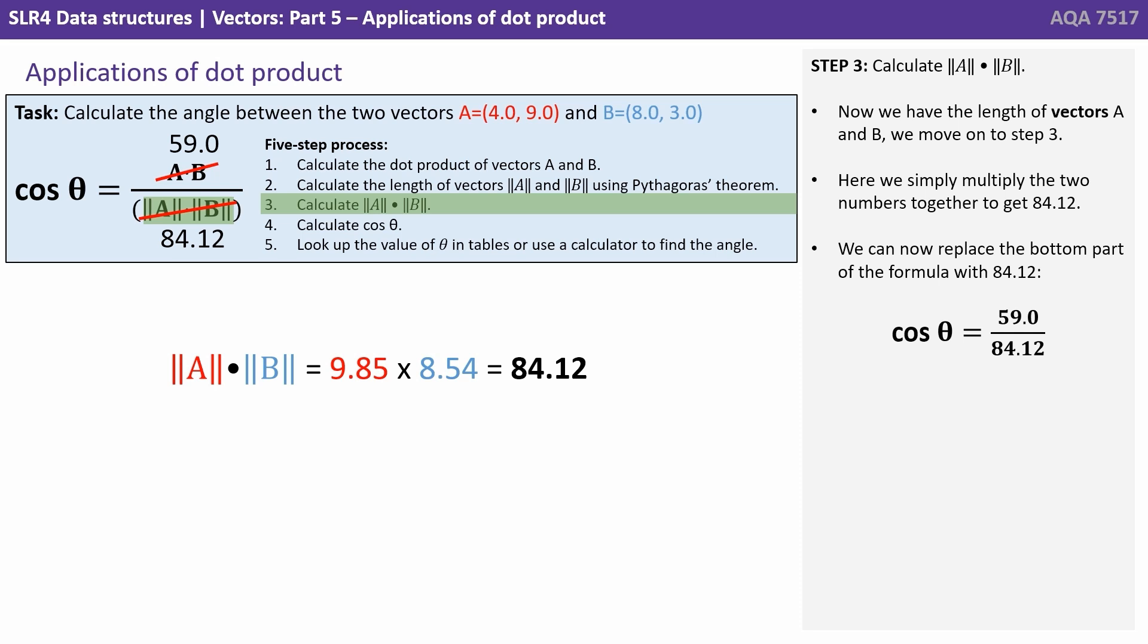We can now move on to step three which is to calculate ||A|| and ||B|| together. So now we have the lengths of vector A and B. We simply multiply the two numbers together and we get 84.12. We can now replace the whole bottom part of the formula with this value 84.12.